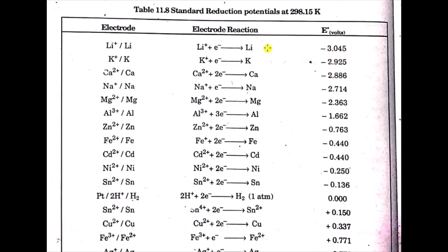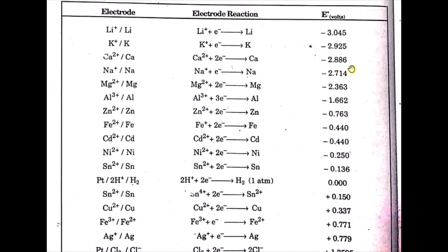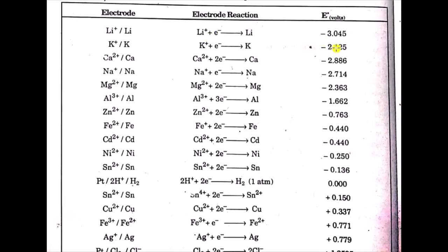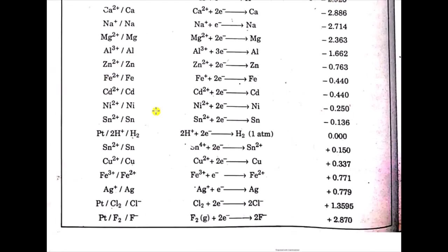In terms of oxidation potential, the oxidation potential of lithium will be greater than 3.045 volts, and for potassium the oxidation potential will be greater than 2.925 volts. This way we can compare reduction and oxidation potentials. The next electrode is the zinc electrode: zinc ions gain two electrons and are converted into solid zinc, with a reduction potential of minus 0.763 volts.